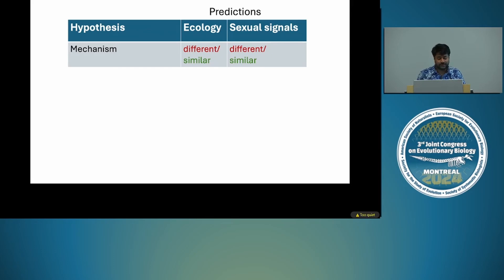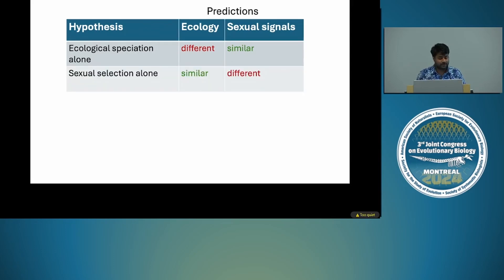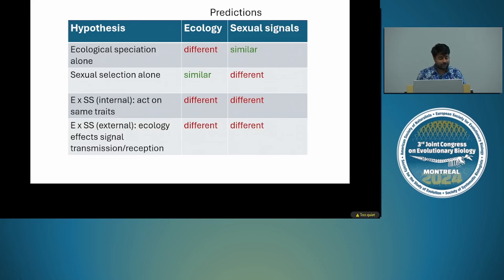If we write down the different mechanisms and what they predict in terms of ecology or sexual signals being same or different: for ecological speciation acting alone, we would expect different ecological environments but similar sexual signals. The reverse is true if the mechanism is sexual selection acting alone. These two can also interact in two ways — an internal interaction such as magic traits, where both divergent natural and sexual selection act on the same trait, or an external interaction where ecology affects signal transmission and reception, such as substrate-borne vibration in insects. Both interactions predict different ecology and sexual signals.